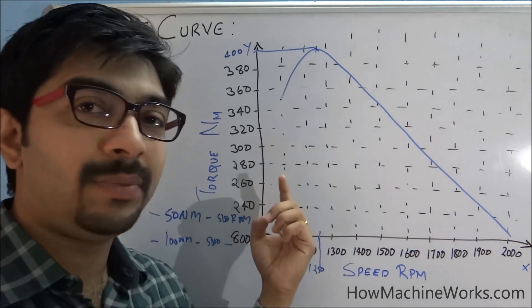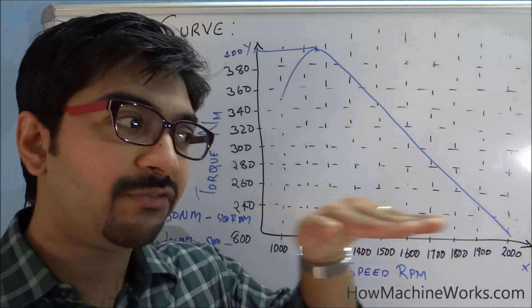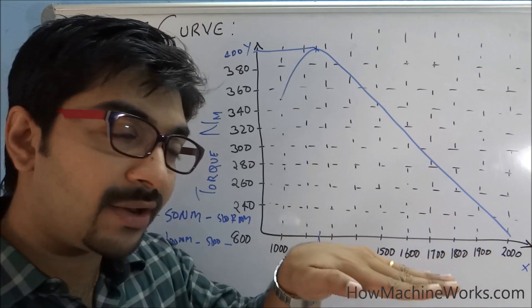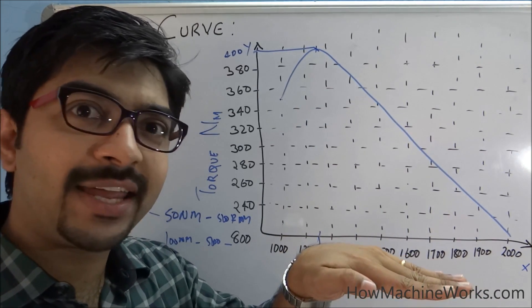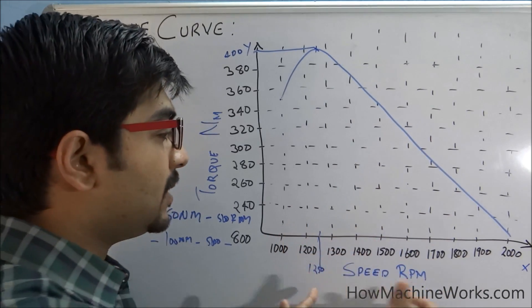But suddenly if you change the car to the down gear, like you're riding on a fifth gear and suddenly you're changing towards the second gear, what happens? The vehicle will have like a braking effect and the vehicle will become slow, and you can feel more torque. But the RPM gets reduced.